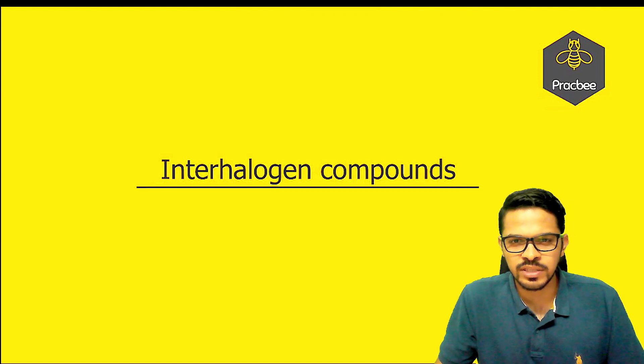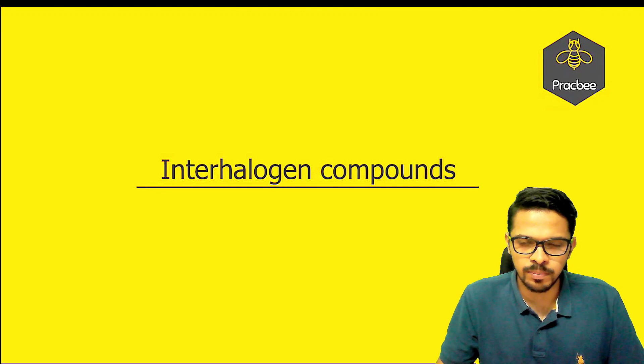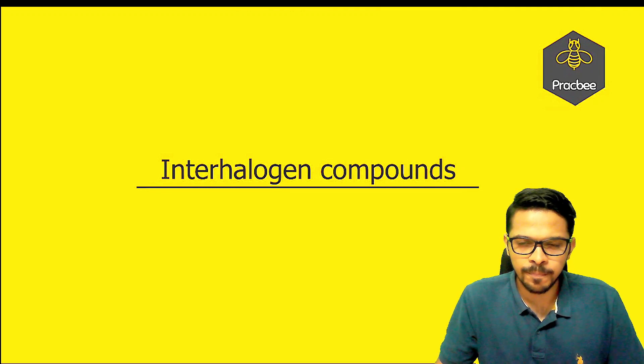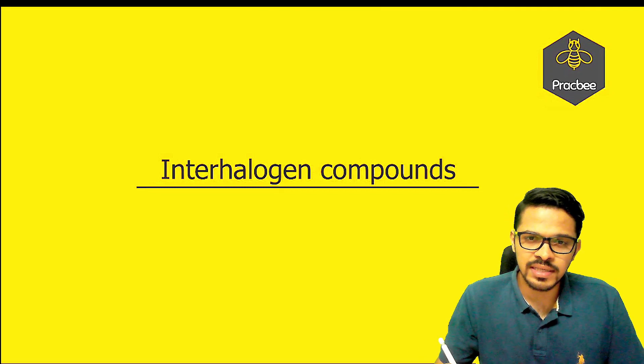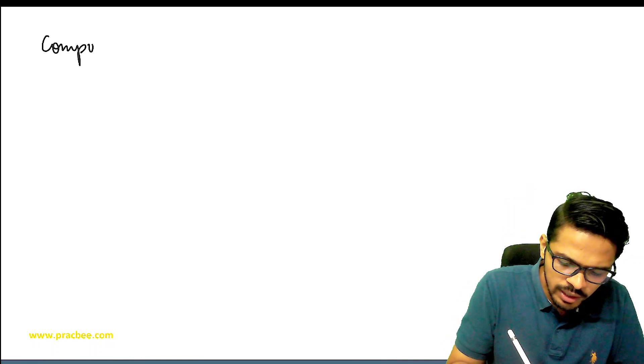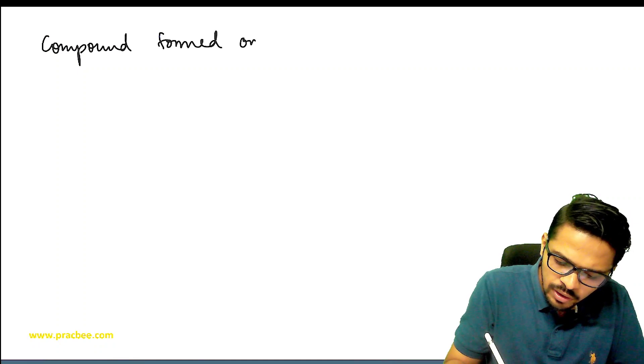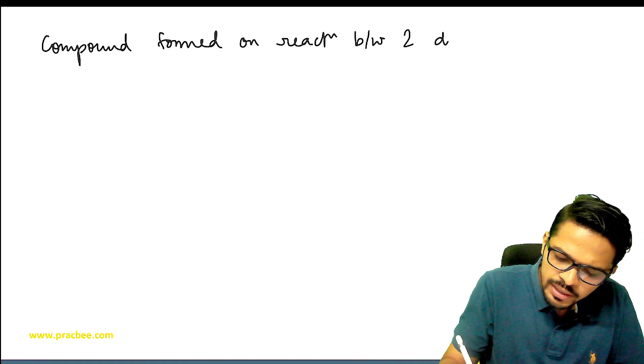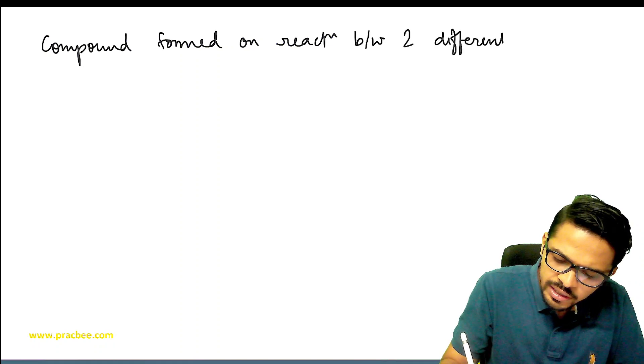Hi everyone, welcome to today's video. In this video, we are going to talk about interhalogen compounds. So interhalogen compounds are, as the name suggests, compounds formed on reaction between two different halogens.